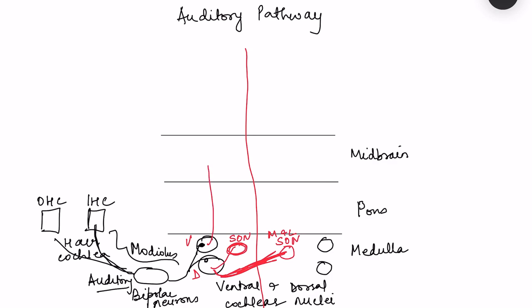Third, from the cochlear nuclei some fibers go directly to the nucleus of the lateral lemniscus, where the bundle of fibers forms the lateral lemniscus. Additionally, some fibers go to the reticular formation in the pons. All these groups of fibers have different processing going on, which is why there is so much diversion of the pathways.